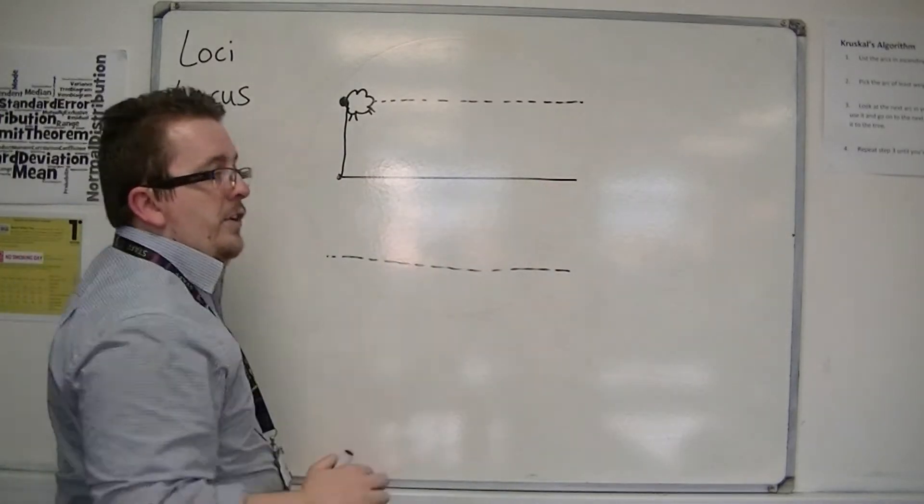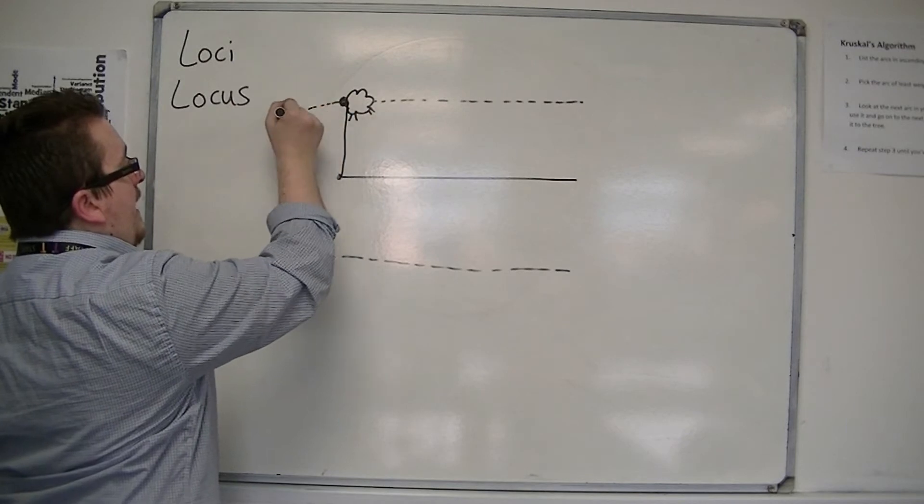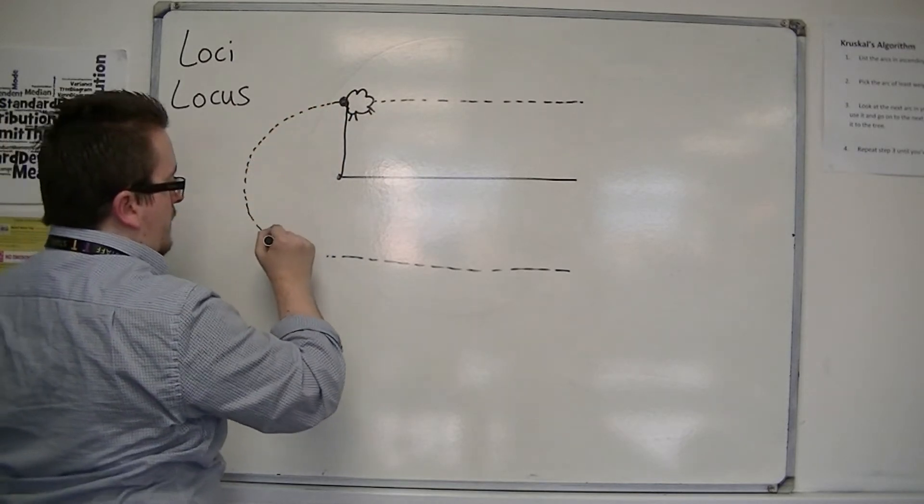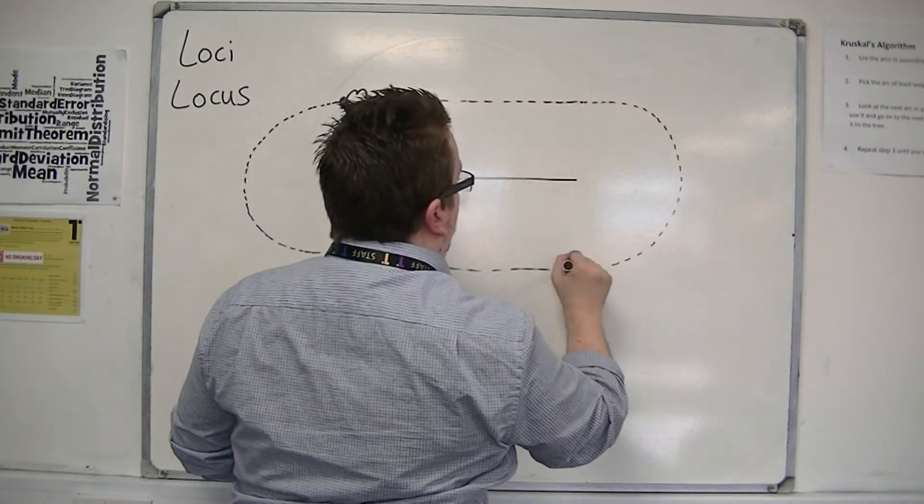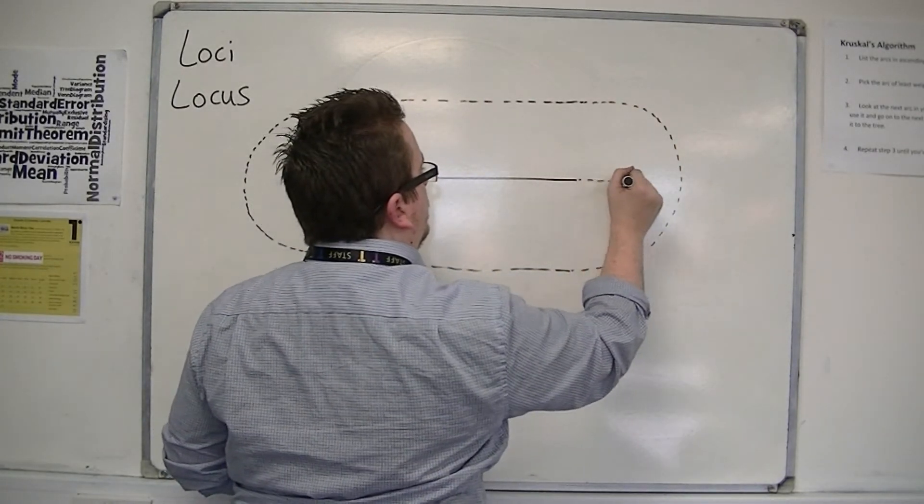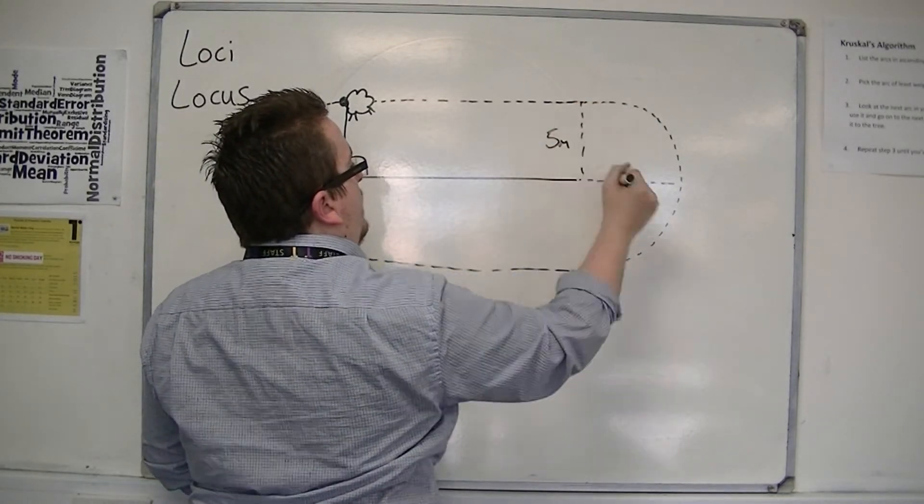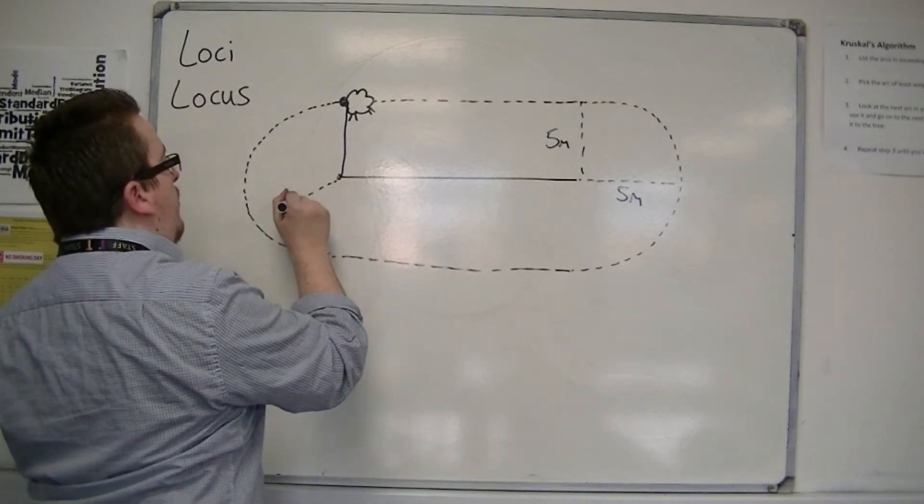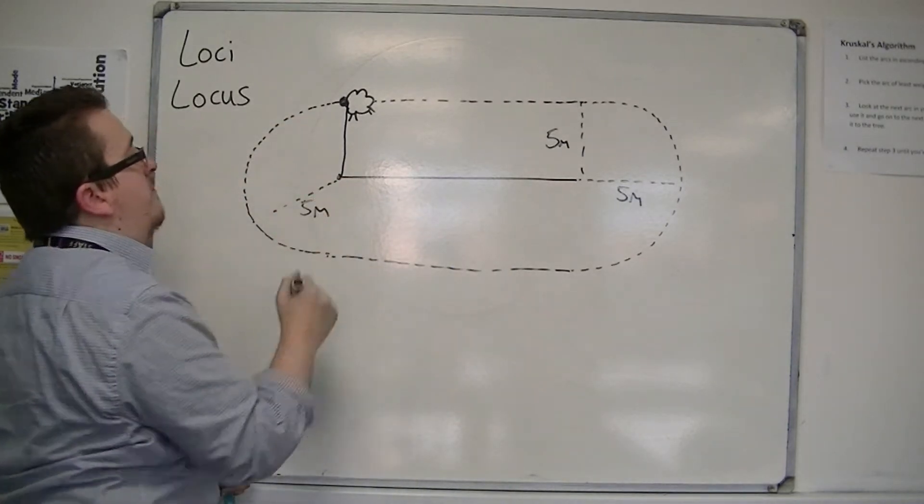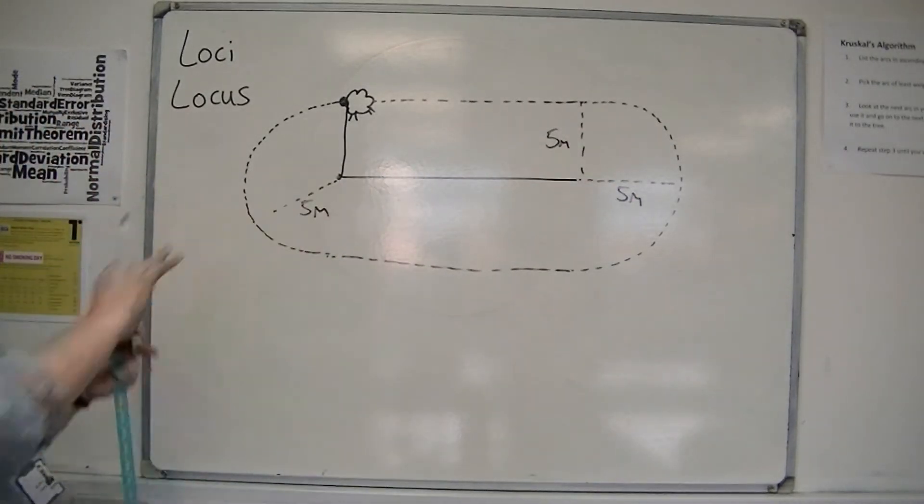Now there's nothing on the other side of the fence, so it can actually move all the way around it. And so it can go all the way around on both ends in a semicircle. So if this is 5 meters like before, then this is 5 meters also. So it kind of makes this kind of sausage shape.